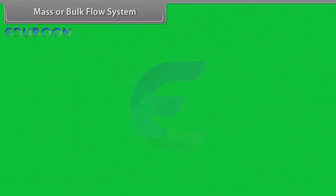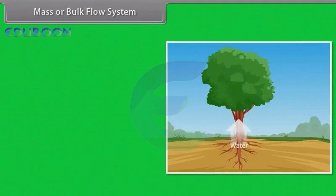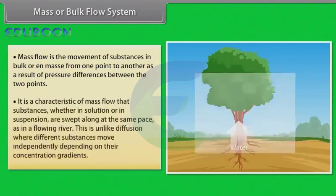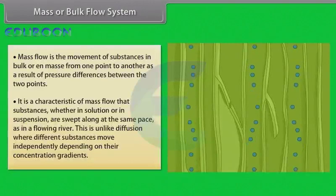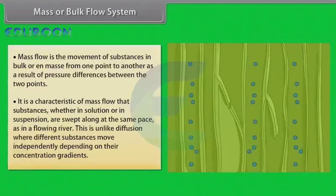In long trees, special long distance transport systems become necessary so as to move substances across long distances and at a much faster rate. Water, minerals and food are generally moved by a mass or bulk flow system. Mass flow is the movement of substances in bulk or en masse from one point to another as a result of pressure differences between the two points. It is a characteristic of mass flow that substances, whether in solution or in suspension, are swept along at the same pace — unlike diffusion, where different substances move independently depending on their concentration gradients.